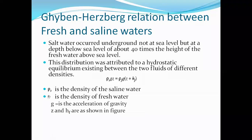The height of fresh water above sea level was attributed to a hydrostatic equilibrium existing between two fluids of different densities. The equation derived to explain this phenomenon is generally referred to as the Ghyben-Herzberg relation: ρs × Z = ρf × g × Z + HF, where ρs is the density of saline water, ρf is the density of fresh water, g is the acceleration of gravity, HF is the elevation of the water table above sea level, and Z refers to the depth of the fresh-saline water interface below sea level.